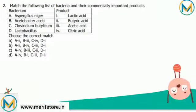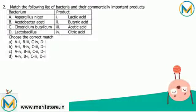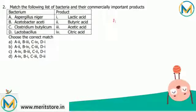Match the following list of bacteria and their commercially important products. Aspergillus niger (A) pairs with citric acid, that is option 4. Then Acetobacter (B) pairs with acetic acid, which is a major product.